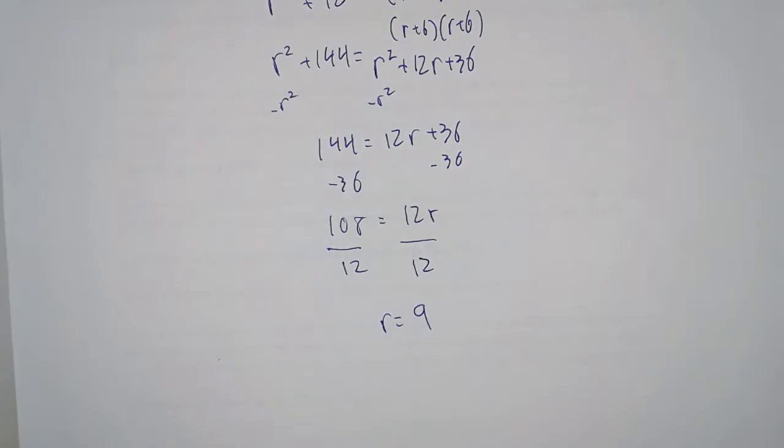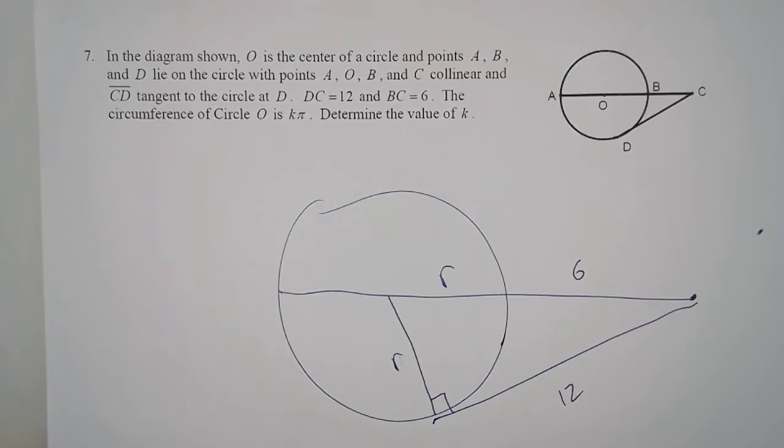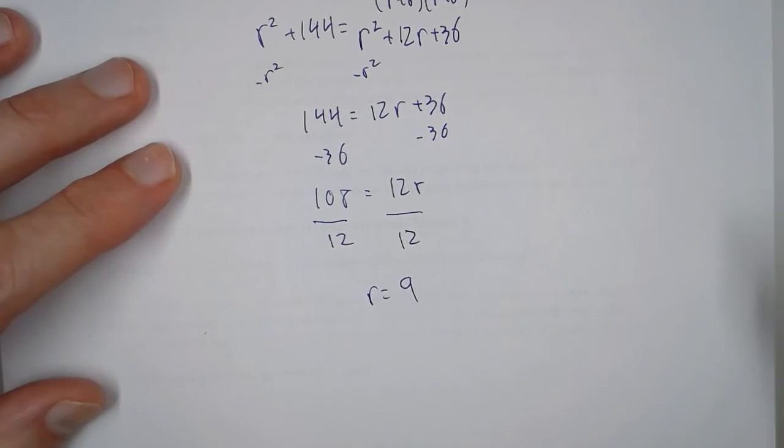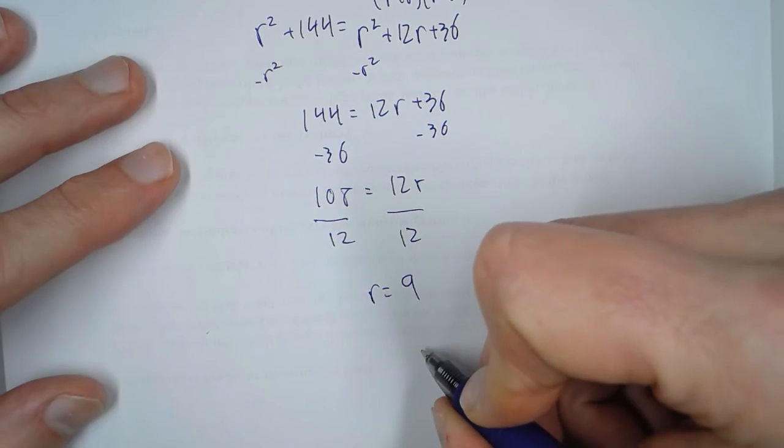However, that is not the answer because the circumference of the circle is K pi, and we want to determine the value of K. If the radius is 9, then we have to find the circumference, which is 2 pi R.